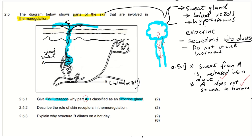This question is general — for every exocrine gland, secretions will be released into a duct, and they will not produce hormones. Sweat is not a hormone. A hormone is a chemical that is released into the blood, but sweat is a secretion — a type of fluid produced by the sweat gland — and it is released into a duct, a tube that drives it out to the skin surface.